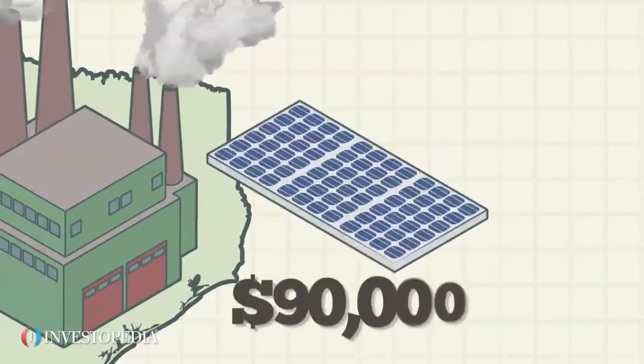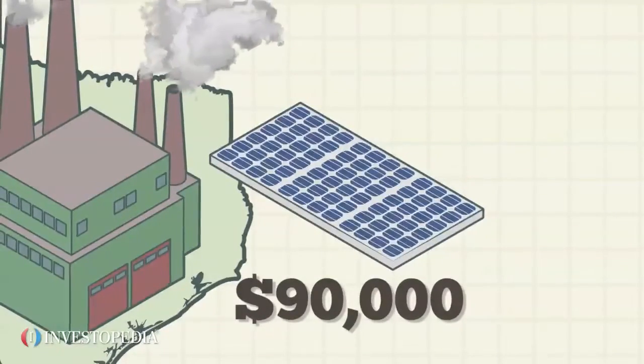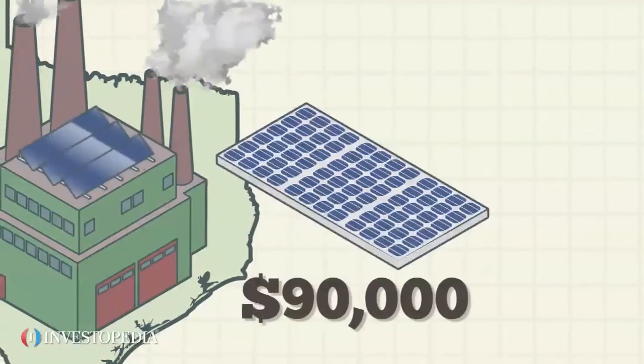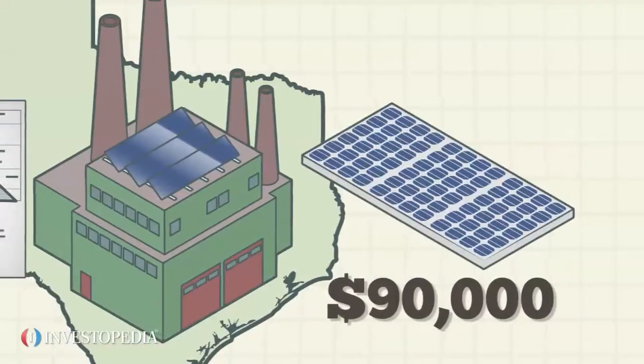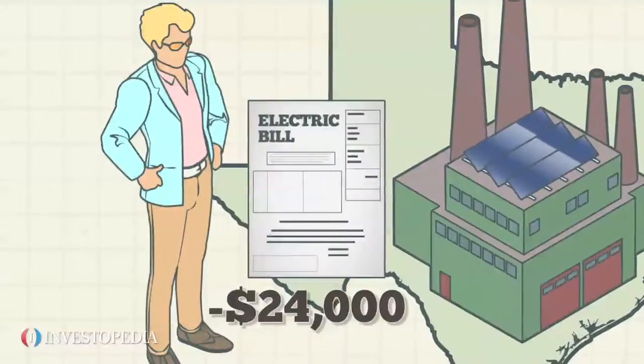It will cost $90,000 to buy and install solar panels. With the panels installed, Sonny estimates his electric bill will have a savings of $24,000.